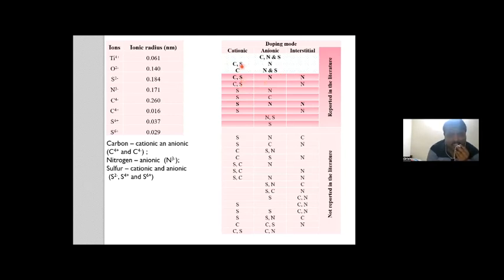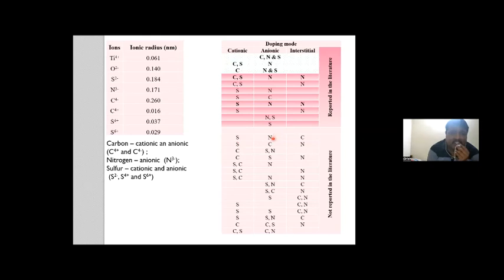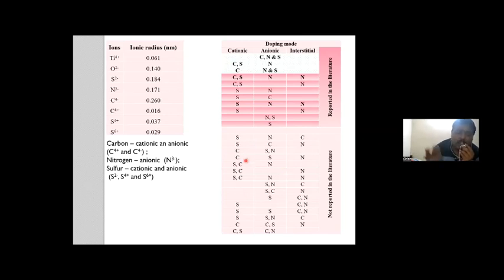Sulfur can be either cationic or anionic. There are instances where carbon is not doped at all due to surface segregation, depending on preparation conditions. Of the 38 reports from 2008 to 2022, these are the widely reported doping modes. What the literature doesn't report — for example, sulfur in cationic sites, nitrogen in anionic sites, and interstitial carbon — means there are many doping modes not yet observed that could yield spectacular electronic properties.